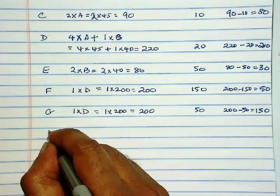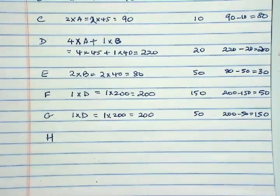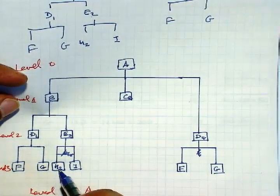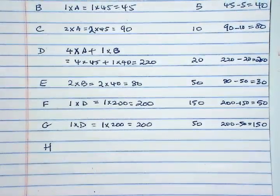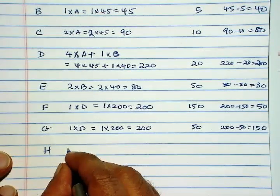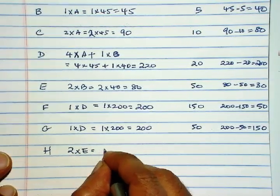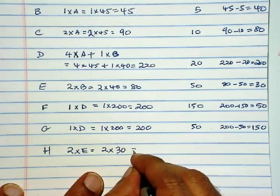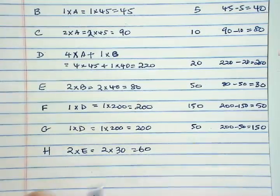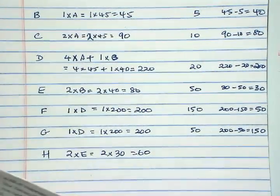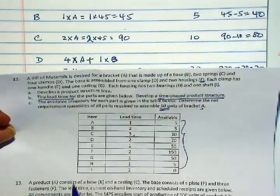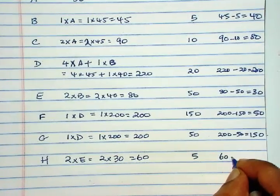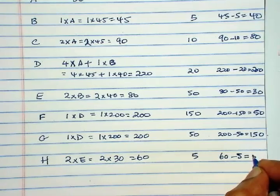Next is H. Now, H, we need 2 units of H for each E. So this is 2 times E. 2 times the net requirement of E is 60. And we have H, 5 units available. So 60 minus 5 is 55.